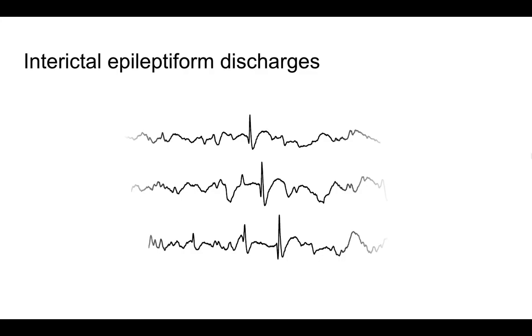Interictal epileptiform discharges, which we will refer to as spikes, are brief electrographic discharges that occur in between seizures in patients with epilepsy.